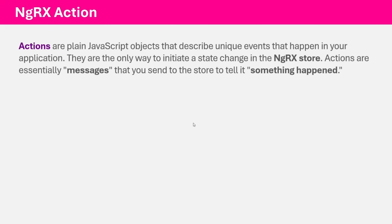Now let's talk about actions. Actions are plain JavaScript objects that describe unique events that happen in your application, and they are the only way to initiate a state change in the NGRX store. Actions are basically messages that you send to the store to tell it that something has happened. You can think of an action like an event. For example, let's say we have an add-to-cart button on the product page. When that button is clicked, we dispatch an action called 'add to cart', which tells the store what has happened, and then the reducer reacts to it.